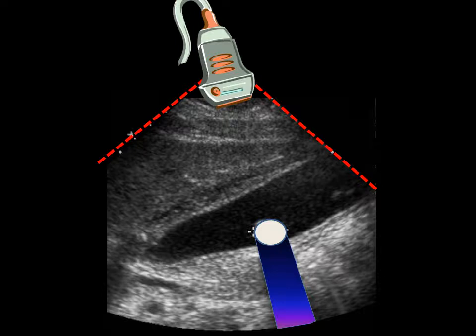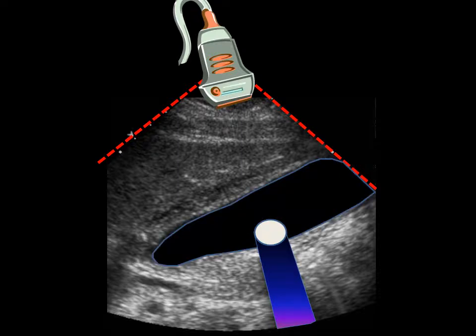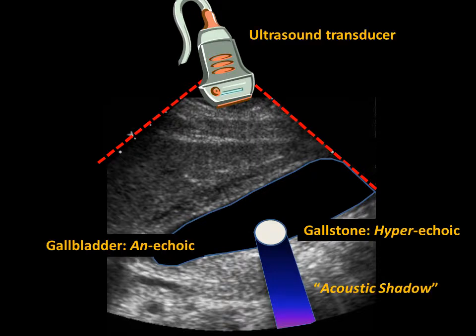The gallstone is within the sonolucent, or echolucent, or anechoic gallbladder, which is fluid-filled. Labeled on this image is the ultrasound transducer, the anechoic gallbladder, the hyperechoic gallstone, and the acoustic shadow.